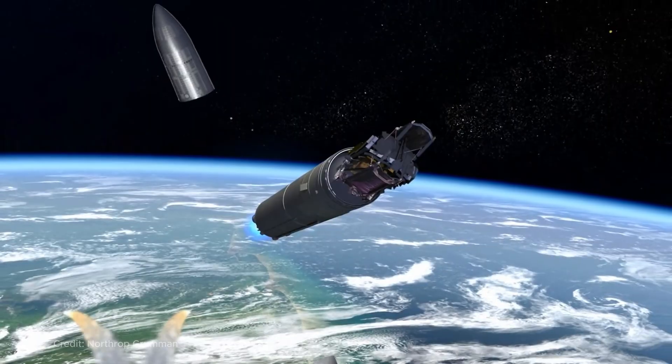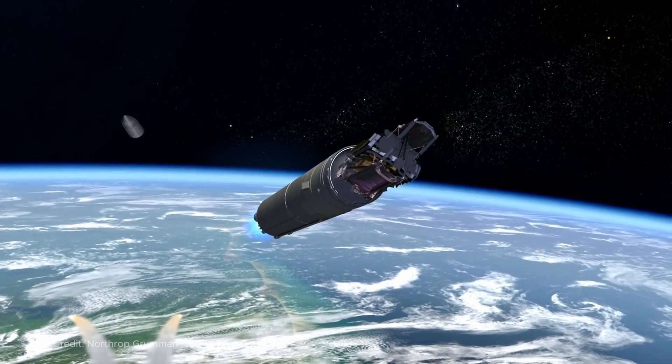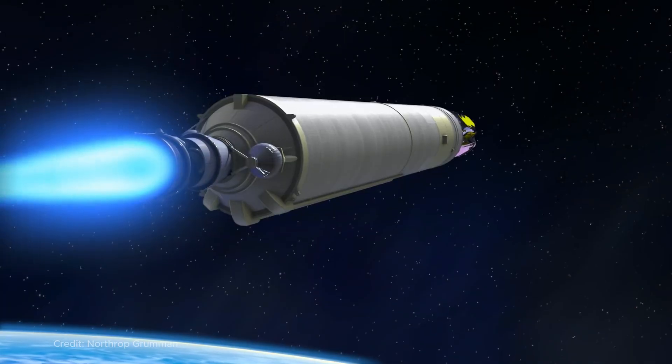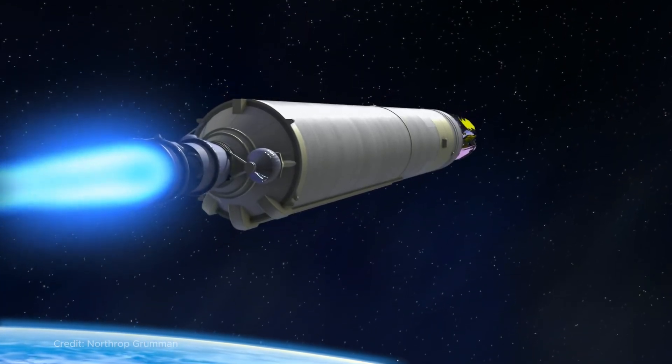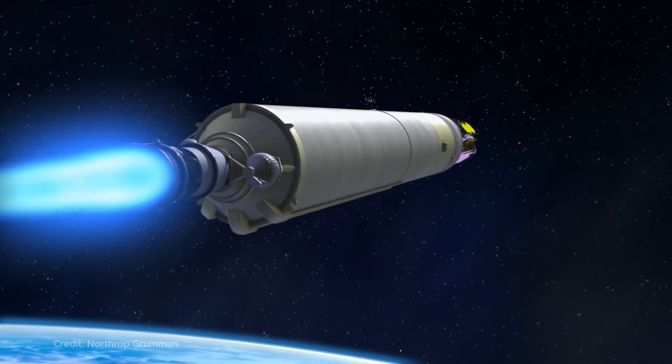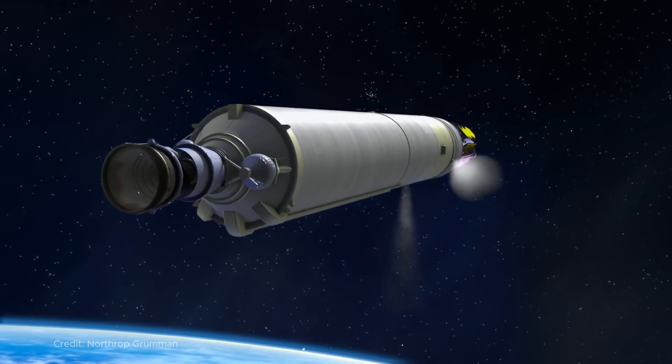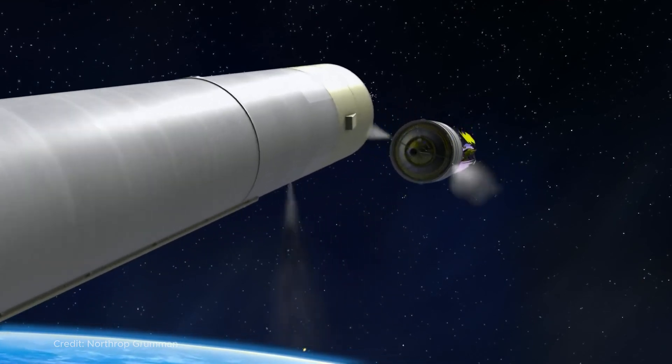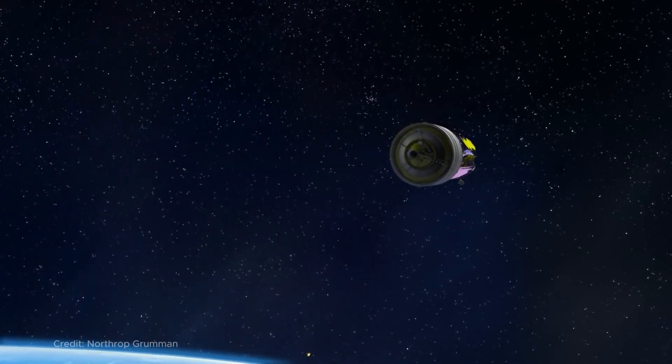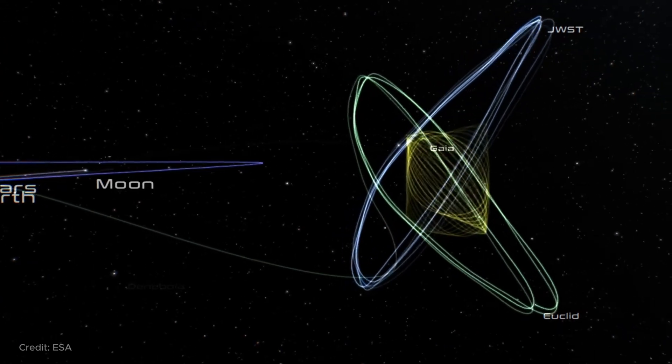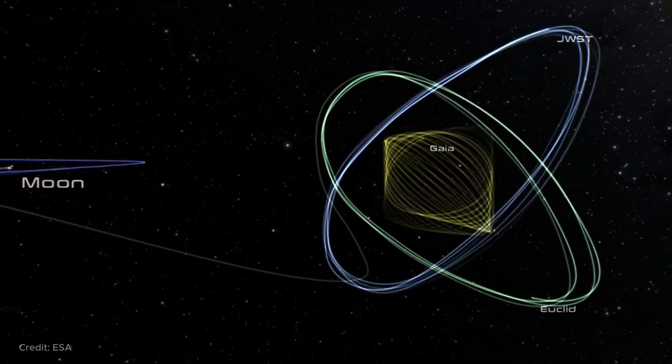We constantly hear about point L2, where so many spacecraft have been sent that it should be crowded there, especially since, unlike L4 and L5, it is not a large area with stable equilibrium but a really small point, and how to stay there. In fact, if we depict the trajectory of a satellite sent to the Lagrange point, we will get quite a tricky curve, or rather curves, as it is a whole family of curves.